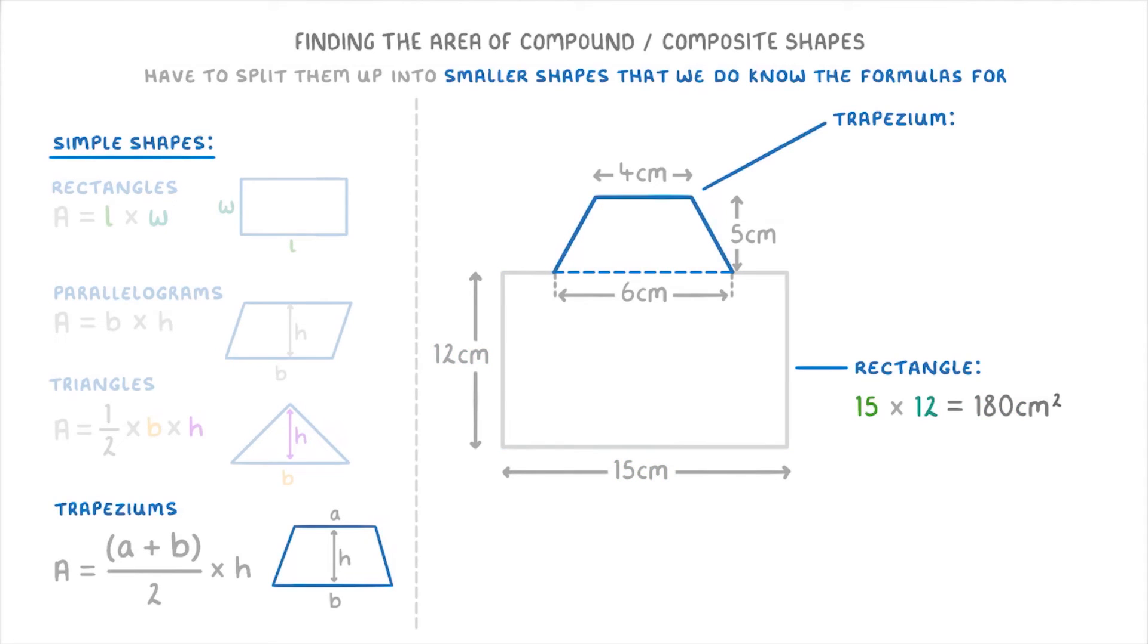Next, if you look at the formula for trapeziums in the bottom left, we first have to find the average length by doing a plus b over 2, and then multiply that by the height. And remember, a and b in this formula are just the top and bottom lengths of the trapezium. So in our case, we'd do 4 plus 6 all over 2, and then times that by the height of 5. And if we simplify that, the 4 plus 6 is 10, and then the 10 divided by 2 is just 5. So we have 5 times 5, which is 25 centimeters squared.